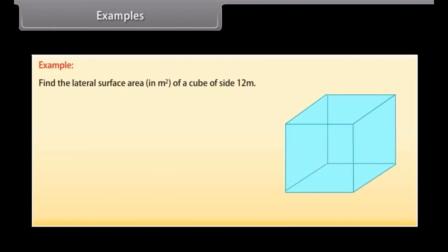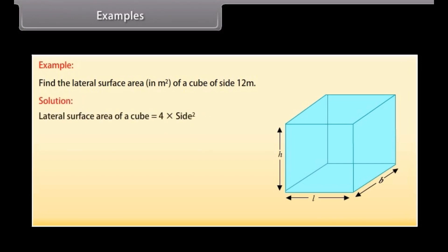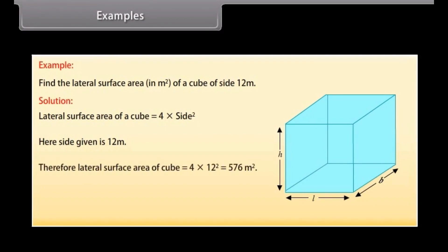Example: Find the lateral surface area in square meters of a cube of side 12 meters. Solution: We know that the lateral surface area of a cube is equal to 4 × side². Here, side = 12 meters. Therefore, lateral surface area of cube = 4 × 12² = 576 square meters.